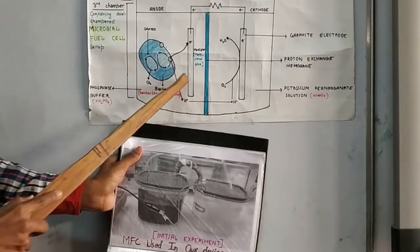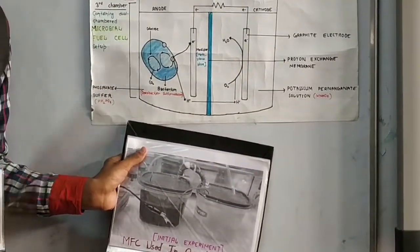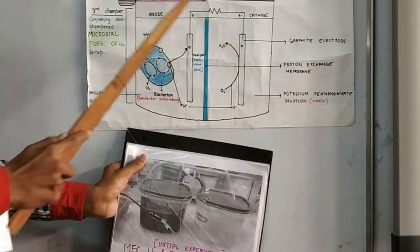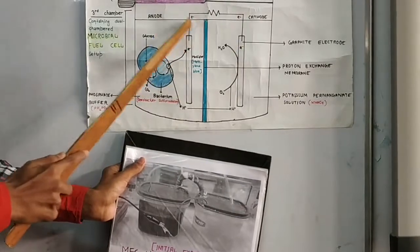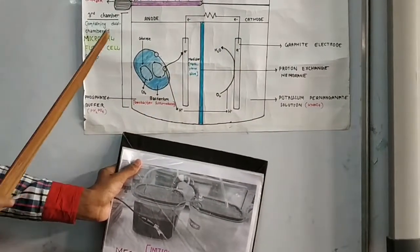We have developed a bio-electrochemical system in which we conducted our initial experiment. In this experiment, we made two chambers: a dual-chambered system. One is an anode chamber and one is a cathode chamber. The anode chamber is anaerobic and the cathode chamber is aerobic.